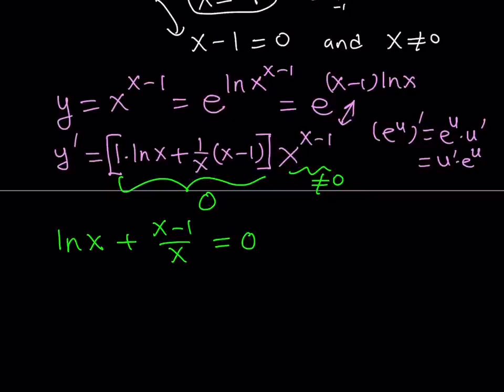So we get the function ln x plus x minus 1 over x equals 0. And obviously, this is a very non-standard equation. We can't really solve it just by normal means. So what we need to do is guess and check. And I know some people are like, you're not supposed to guess. Well, it's a problem-solving strategy, whether you like it or not. So in this case, I'm going to say x equals 1 is a solution because 0 plus 0 equals 0. So x equals 1 is a critical point.